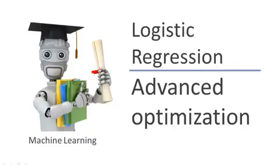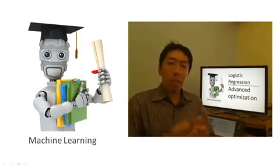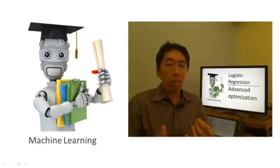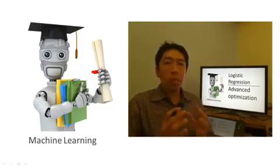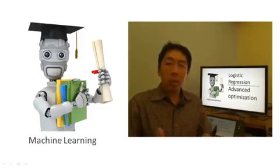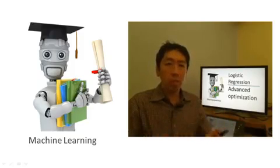In the last video, we talked about gradient descent for minimizing the cost function J of theta for logistic regression. In this video, I'd like to tell you about some advanced optimization algorithms and some advanced optimization concepts. Using some of these ideas, we'll be able to get logistic regression to run much more quickly than is possible with gradient descent, and this will also let the algorithms scale much better to very large machine learning problems, such as if we have a very large number of features.